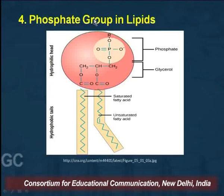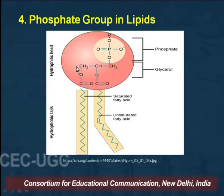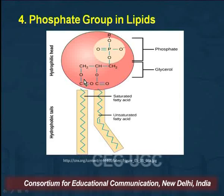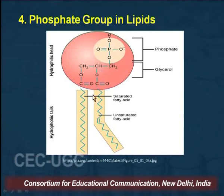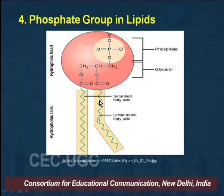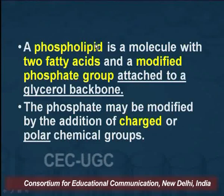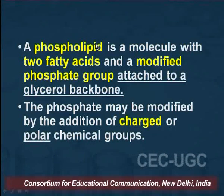Now we turn to phospholipids, where the phosphate group is present in lipids. In a phospholipid, glycerol forms the backbone, attached to a phosphate group and two fatty acids which may be saturated or unsaturated. A phospholipid is a molecule with two fatty acids and a modified phosphate group attached to a glycerol backbone. The phosphate may be modified by the addition of charged or polar chemical groups.